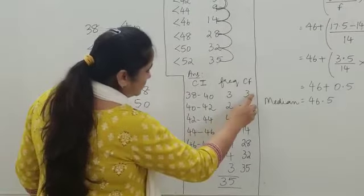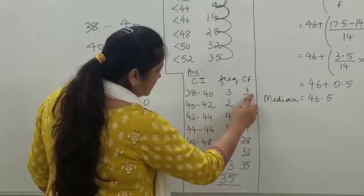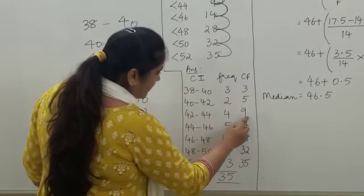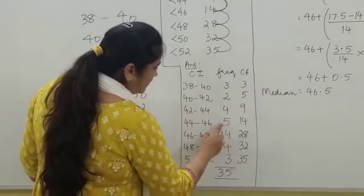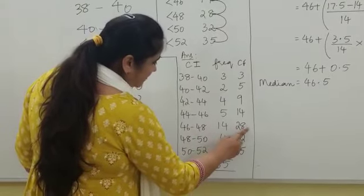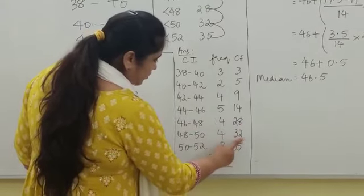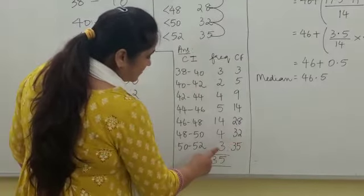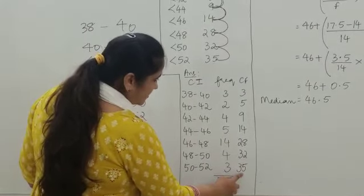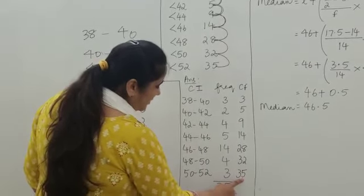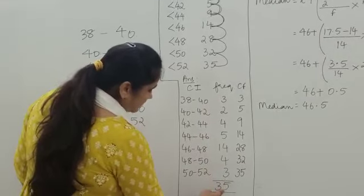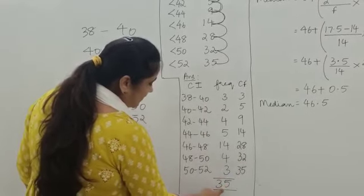To build the cumulative frequency column: write 3 as it is; 3 plus 2 equals 5; 5 plus 4 equals 9; 9 plus 5 equals 14; 14 plus 14 equals 28; 28 plus 4 equals 32; 32 plus 3 equals 35. As always, the last cumulative frequency should equal the total of the frequency column, which is 35. Our table is now ready.